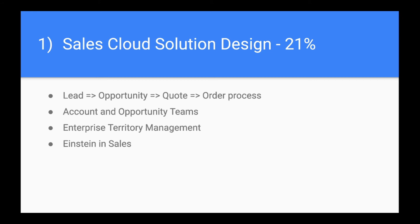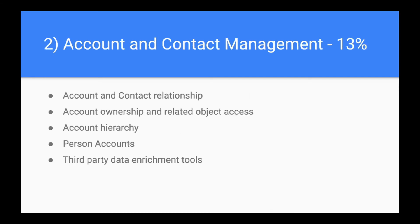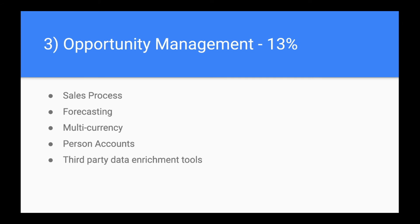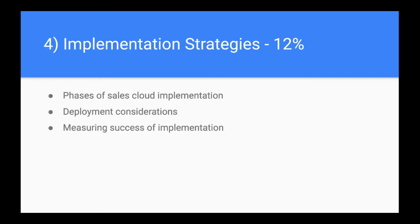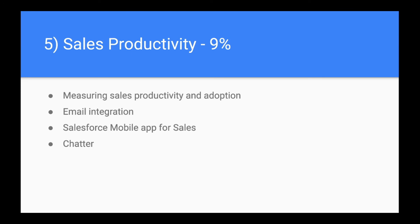In the first module, which has the highest weightage, we will be covering the main objects in Sales Cloud, how account and opportunity teams work, enterprise delivery management, and how Einstein is used in Sales Cloud. In the second module, we will be covering how accounts and contacts are related and everything related to accounts. The third module is about opportunity and everything related to opportunity, like how sales forecasting works.